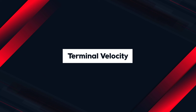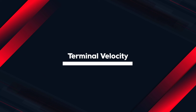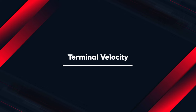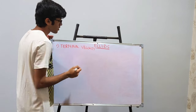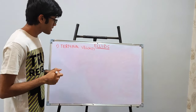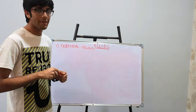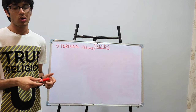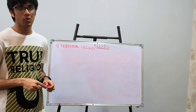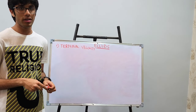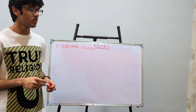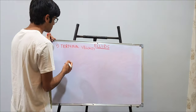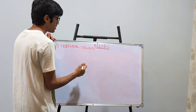Let us understand the next topic which is terminal velocity. Terminal velocity is nothing but the maximum constant velocity acquired by a body falling through a viscous medium. We will have to derive its formula.